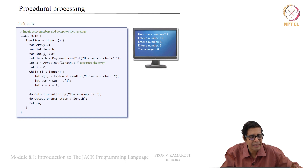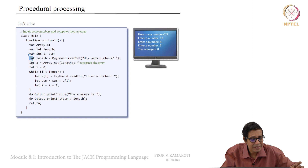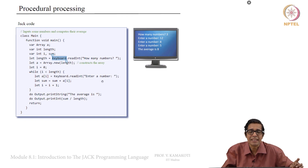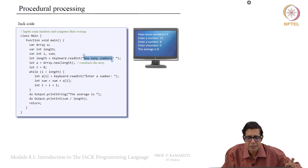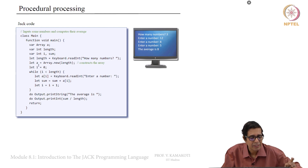We have declared array a, declared length, and declared i and sum. We set length equal to Keyboard dot readInt, which reads an integer from the keyboard — Keyboard is a class provided by the operating system. So when this statement executes, 'how many numbers?' appears on screen, you press 3 and enter. Then we say let a equal to Array dot new of length, creating an array of size 3 with elements a[0], a[1], and a[2] — equivalent to malloc in C.